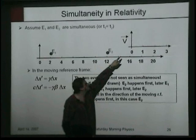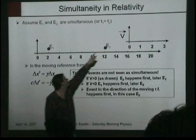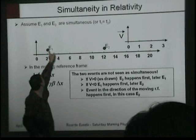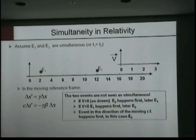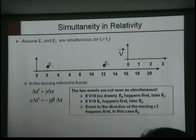In fact, if that reference frame is moving in that direction, you see that a person in that reference frame is seeing this one happening first and this one happening later. Of course, if it were to go the other way around, you will see this happening first and that happening later. So, the event in the direction of the moving reference frame happens first, because this guy sees the light coming from that one move first.